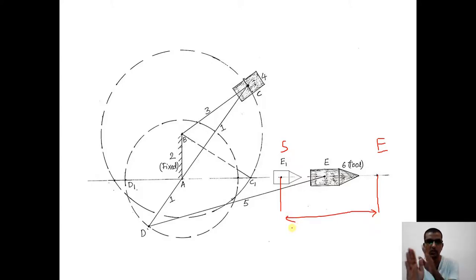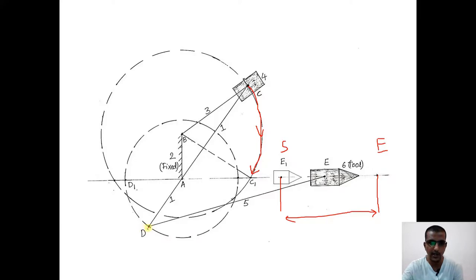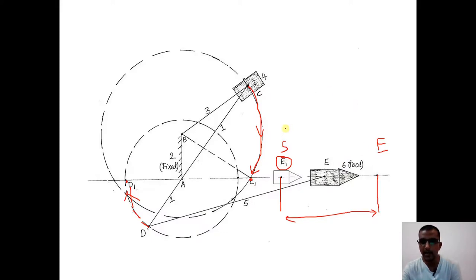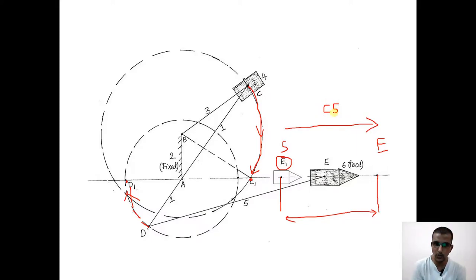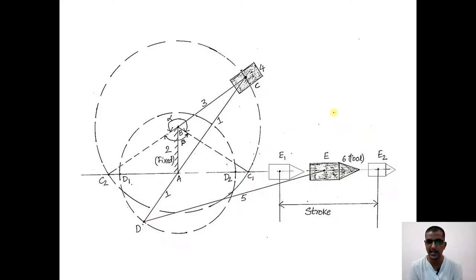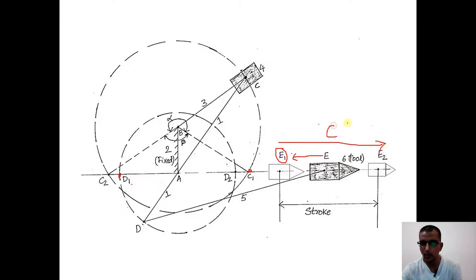When the tool moves from left to right it is the cutting stroke, and right to left is the return stroke. Now I bring C to C1 and correspondingly D moves to D1. The current position is C1, D1, and E1. My next objective is to move from E1 to E2 — that is left to right — to produce the cutting stroke. For that, C needs to move from C1 to C2 and D1 to D2.